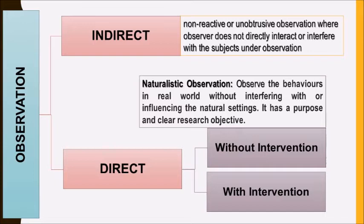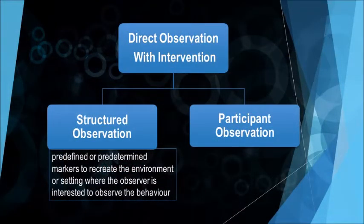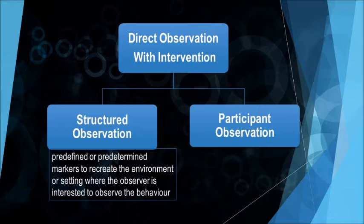Similarly, observing students in their classroom is a naturalistic observation because you are not recreating any classroom setting to engage students under observation. Another type is observation with intervention, which includes structured observation and participant observation. Structured observation is a controlled observation where the observer can use predefined or predetermined markers to recreate the environment or setting to observe the behavior. An example is the work of developmental psychologists — how they observe children's behavior at different stages using structured observational settings.